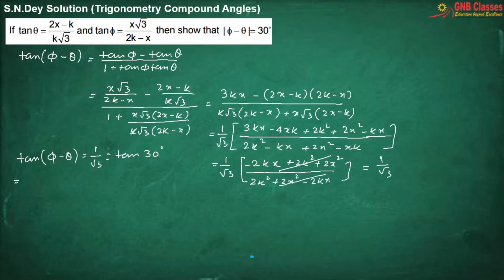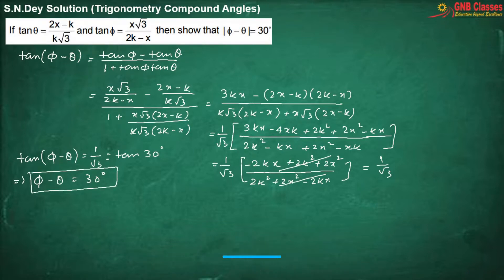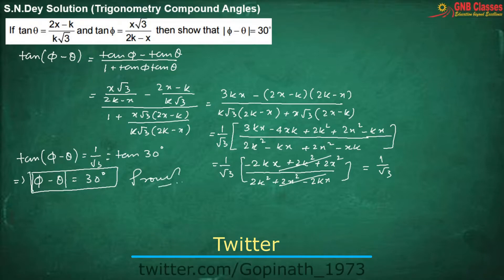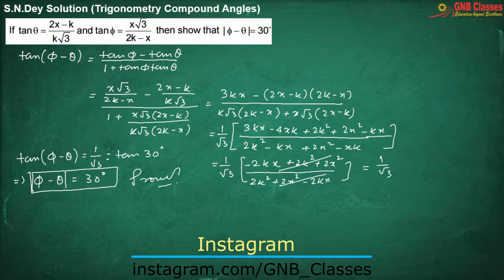Therefore phi minus theta is 30 degrees. Is it clear? Proved. Here the mod sign indicates the absolute value of the difference between these two angles, phi and theta. Is it clear? Let us move for the next problem.